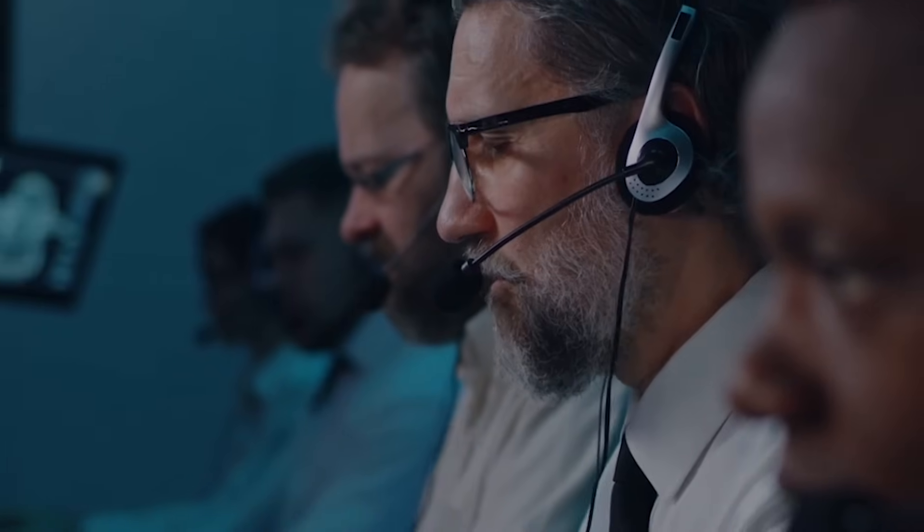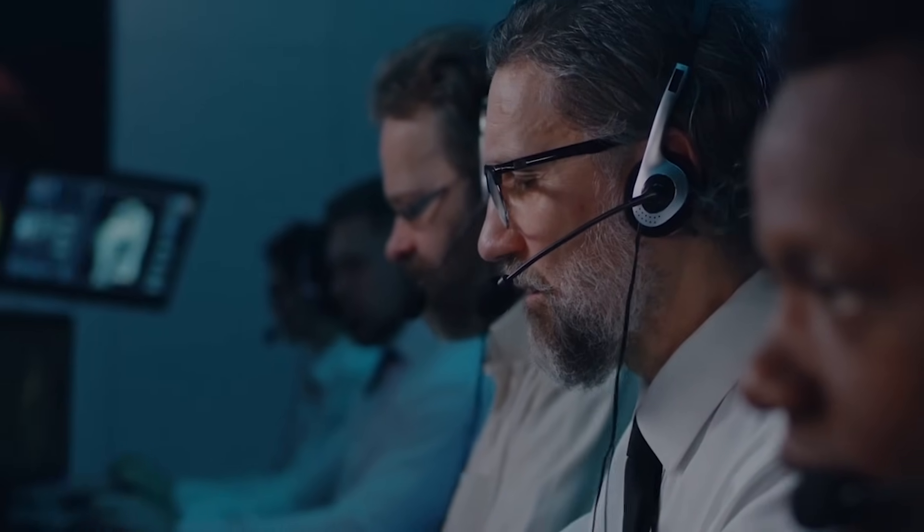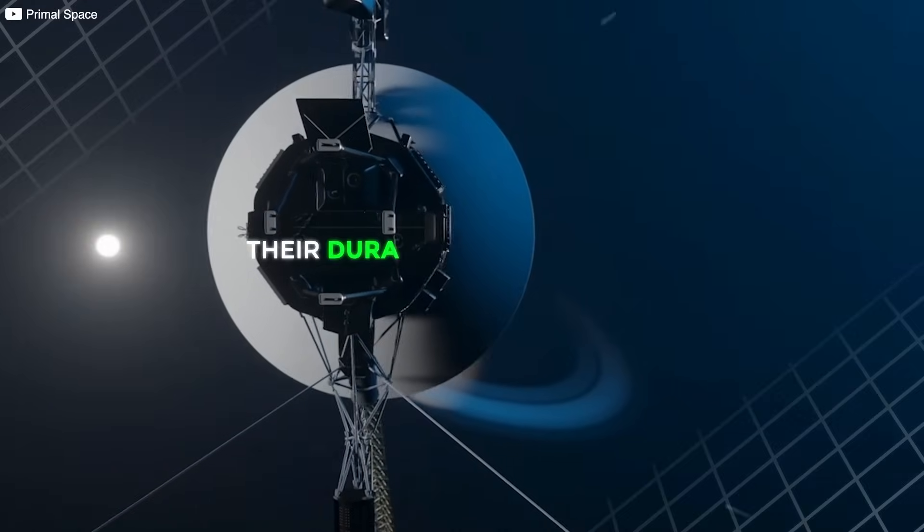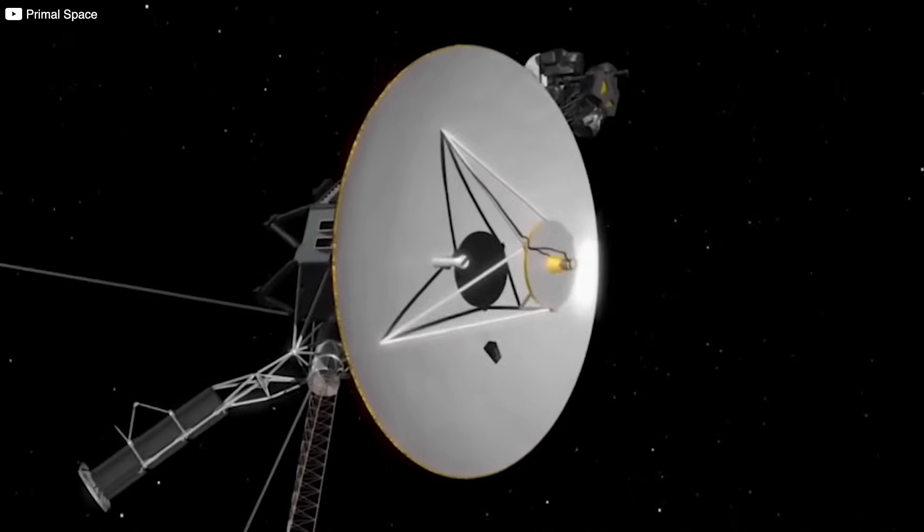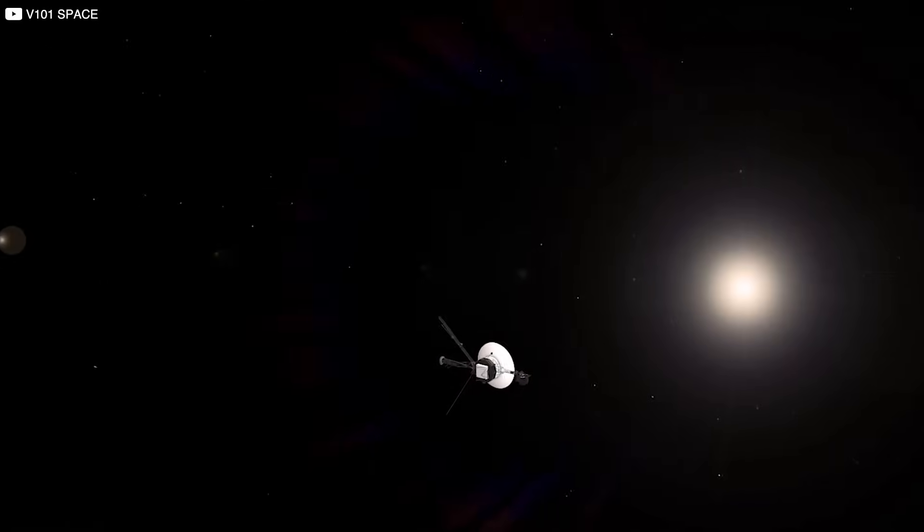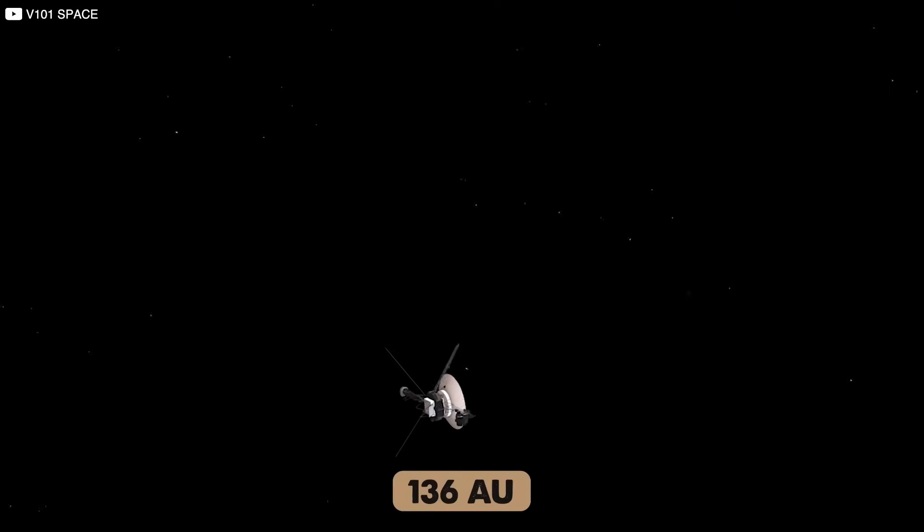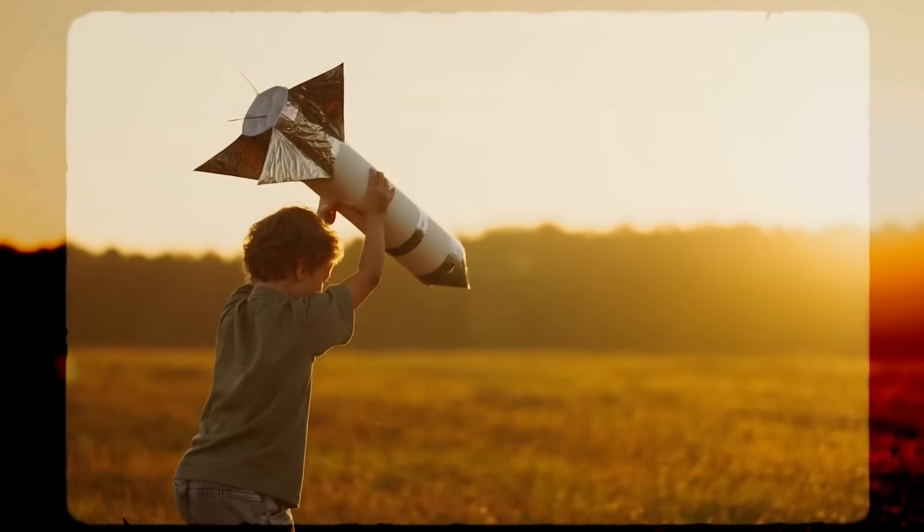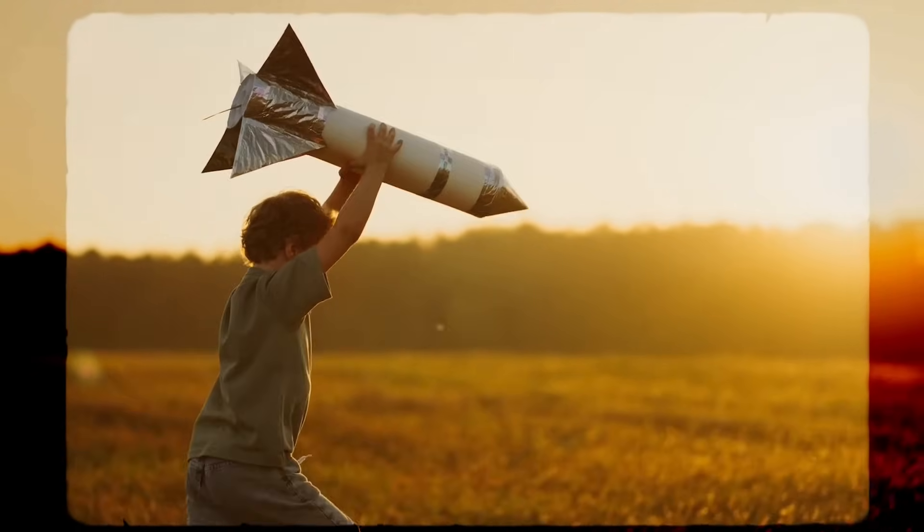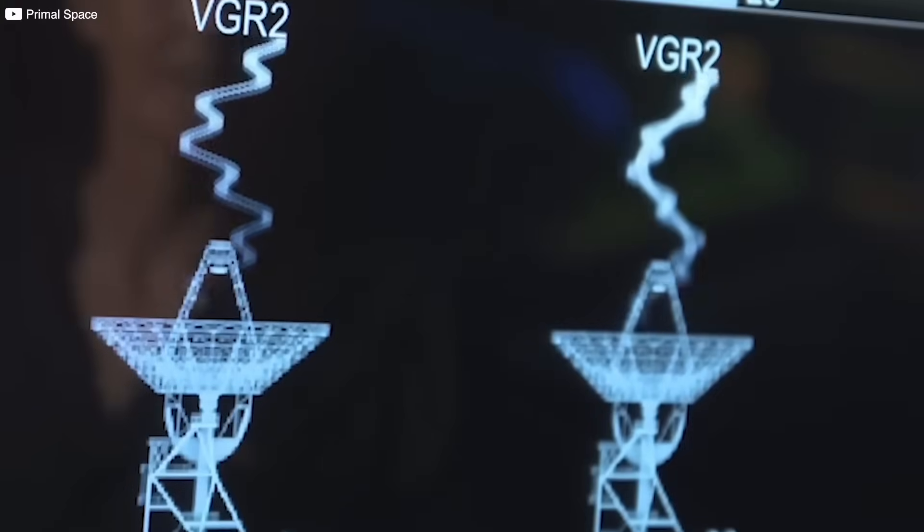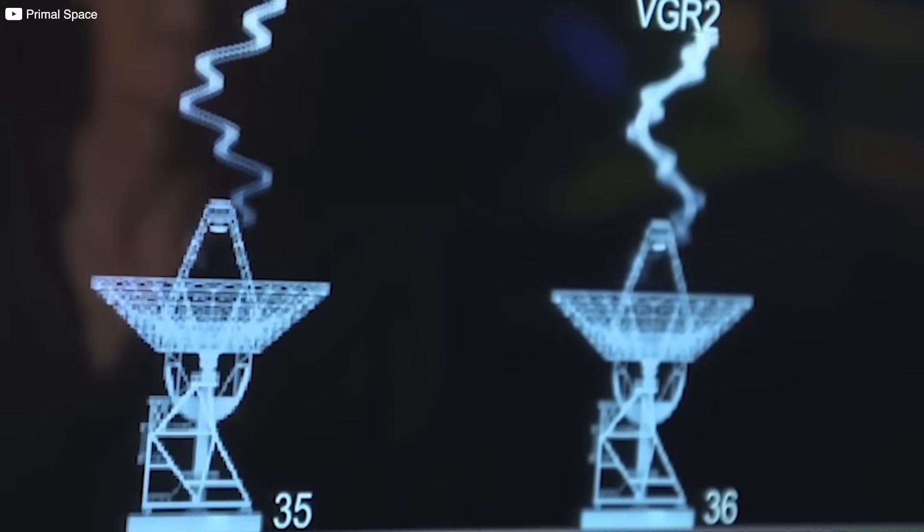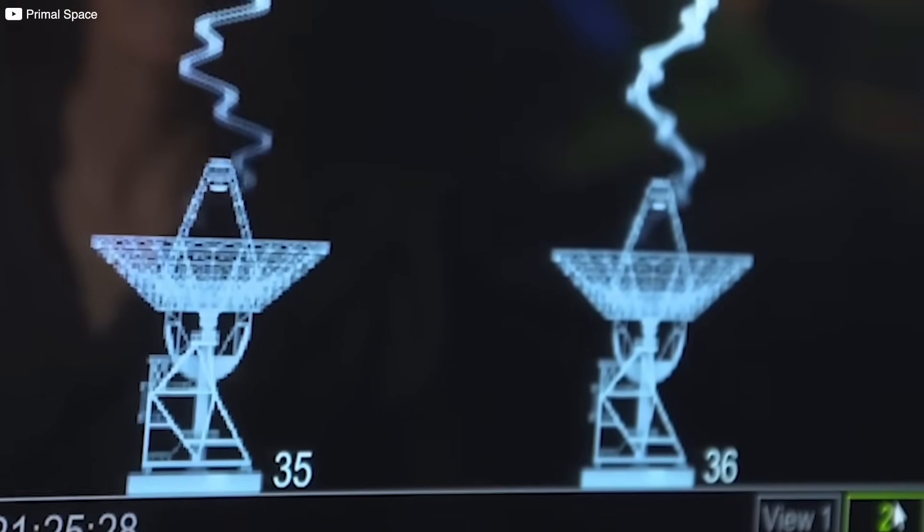Imagine a command sent from Earth today won't reach Voyager 1 until nearly a full day later, and its reply won't return until the day after that. Voyager 2, traveling a different route, is currently over 136 AU away. Both probes remain tiny sparks of human curiosity, venturing across the vast ocean of interstellar space, still faithfully sending data home on technology built nearly 50 years ago.